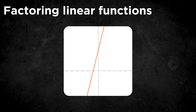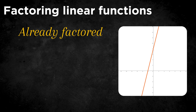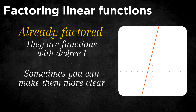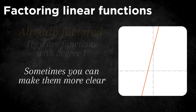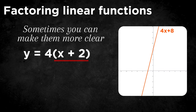First, let's look at linear functions. These functions are already factored by definition, because they only consist of terms with degree 1, so we don't need to do anything more. In some cases, however, we can rewrite linear functions with a little tweak to make it more clear what the root is. When we have, for example, the function y equals 4x plus 8, we can rewrite it to see the root directly. We do this by factoring out the 4, which gives us 4 times (x plus 2), making it easy to identify the root as x equals minus 2.